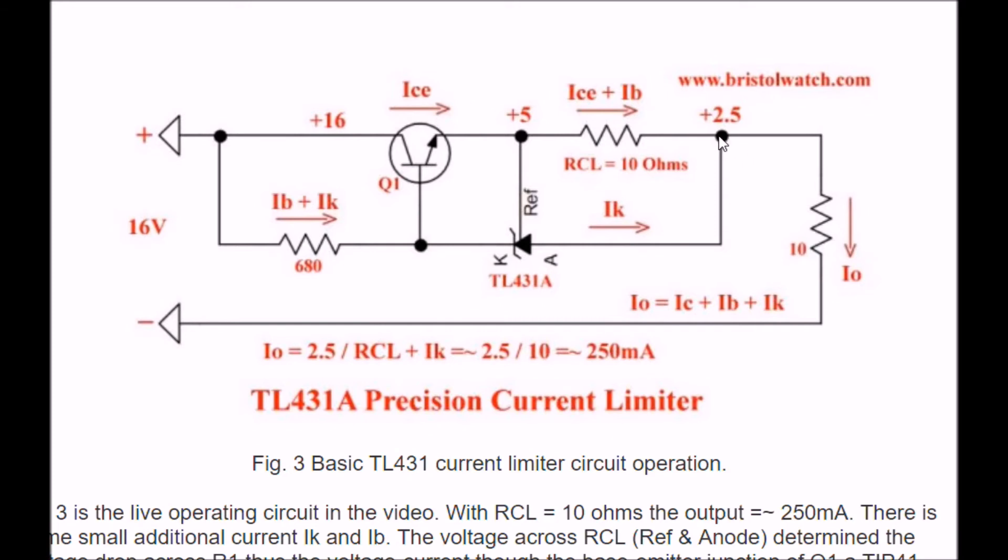IK moves through the cathode anode of the TL431. It all comes back together, but it amounts to this. If you divide 2.5 by 10 ohms, you get approximately 250 milliamps for I out.